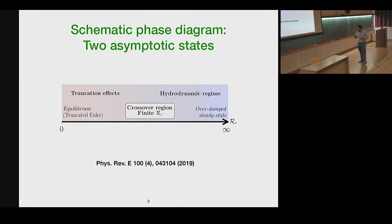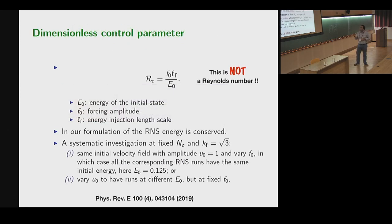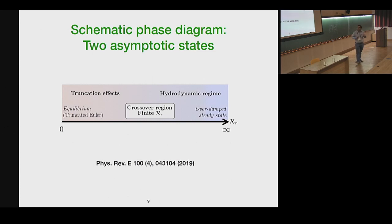If you look at this equation, you can think of two asymptotic limits, one when r is 0, and the other when r is infinity. R=0 actually will correspond to an Euler equation, which is freely evolving. And this is a joint limit in which the viscosity and the forcing amplitude together vanish.